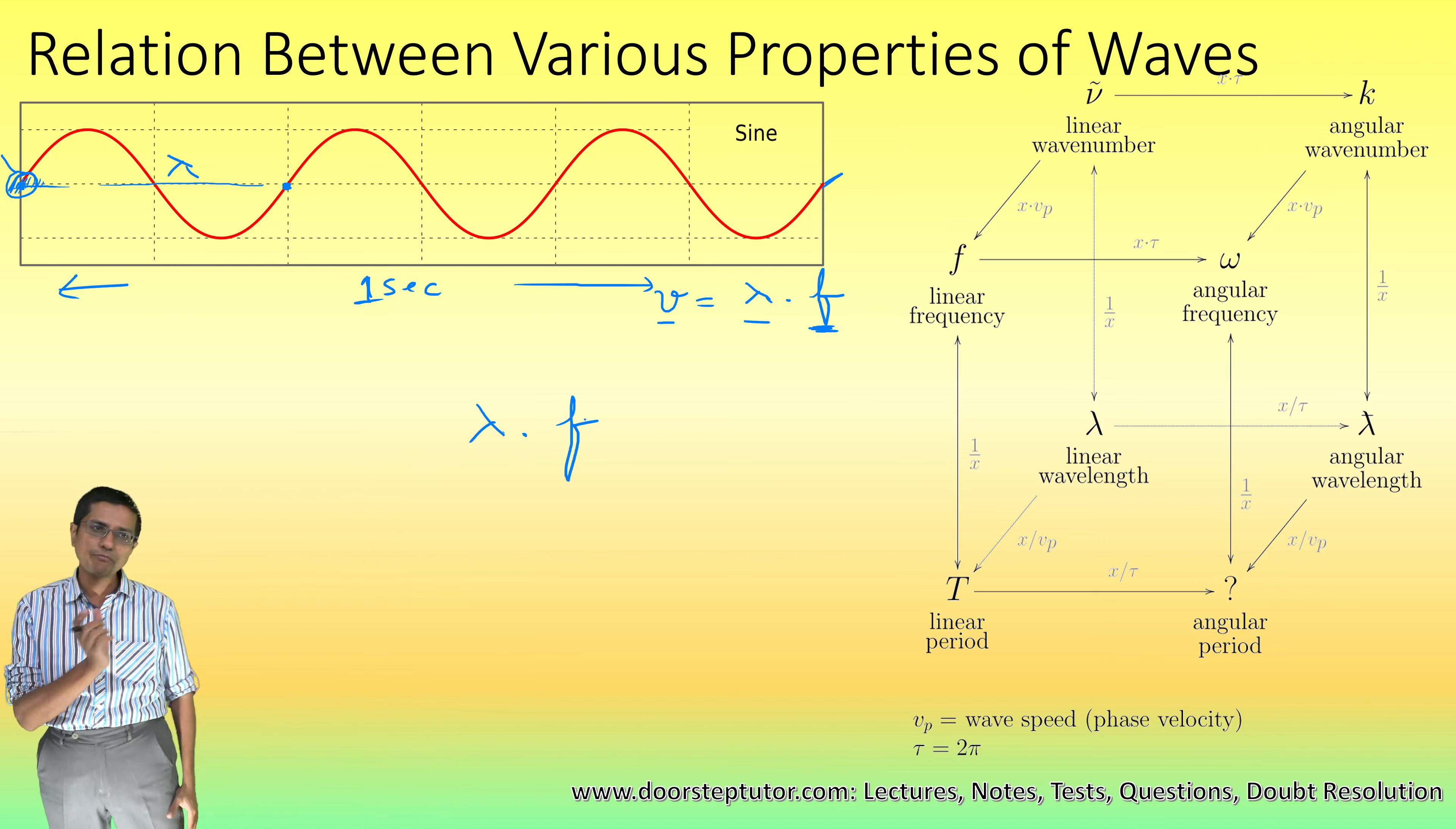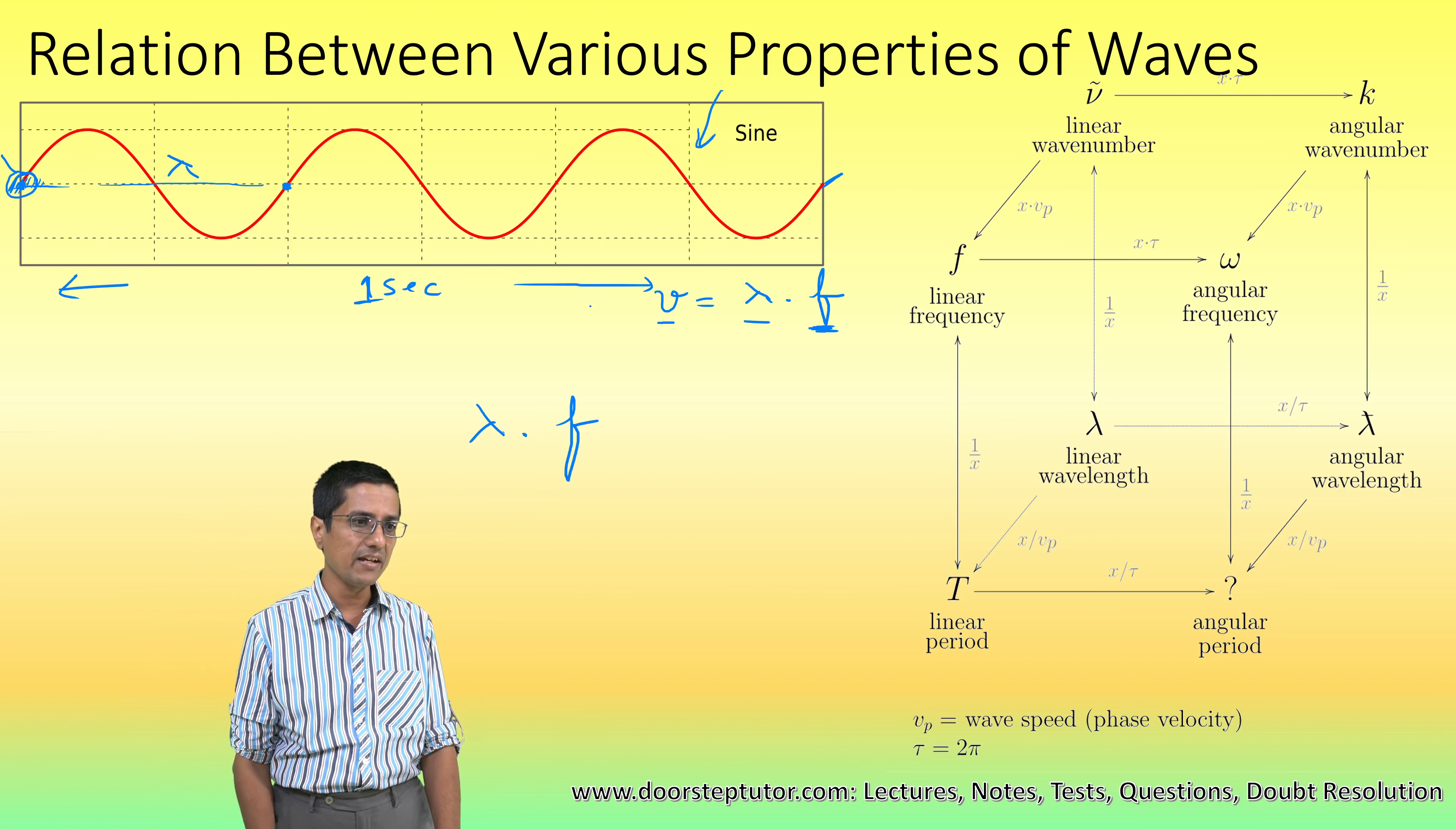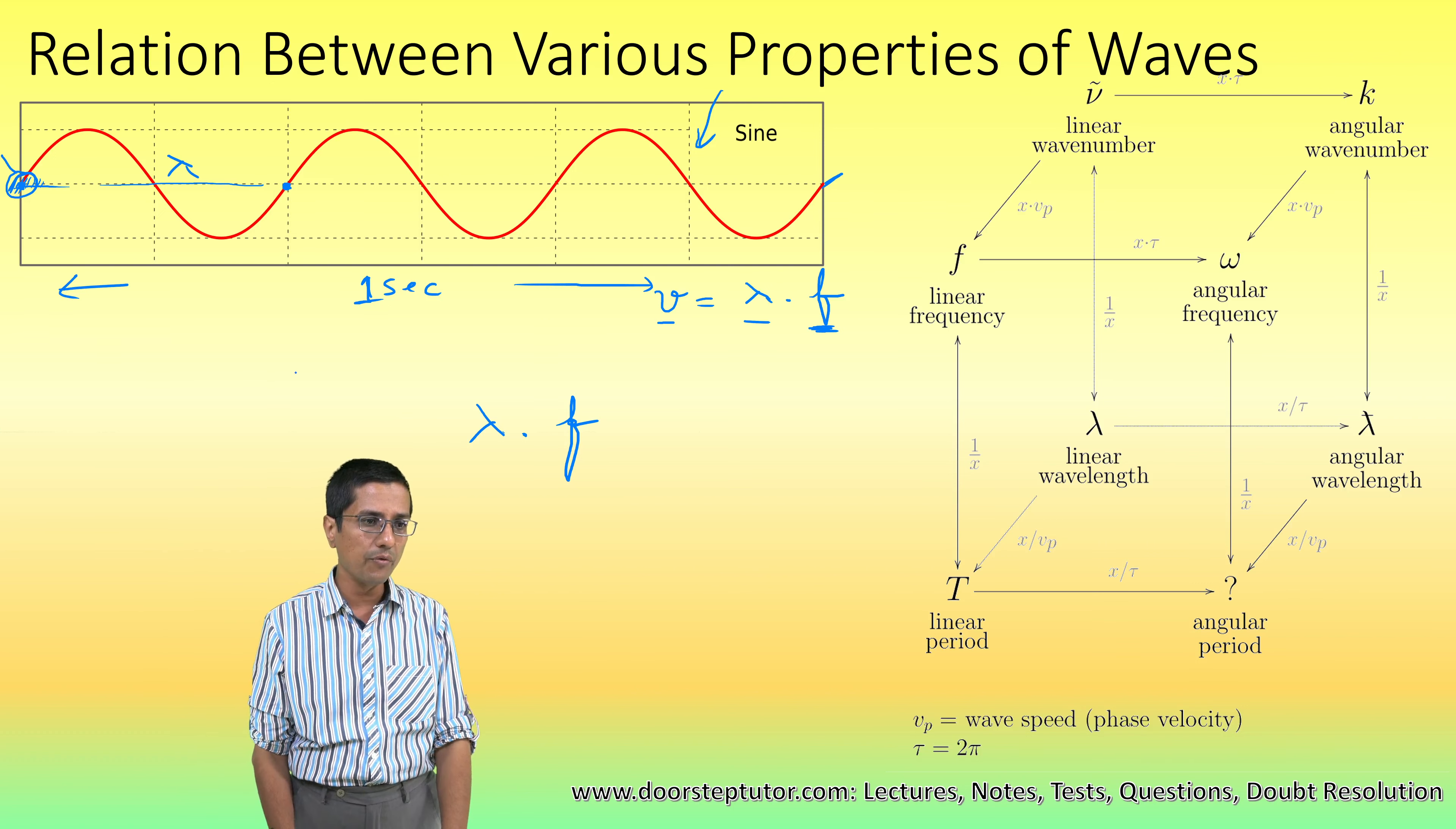So in one second, f number of wave patterns would be formed, and therefore the total distance of waves which is created in one second would be equal to lambda f. Now because the source is continuously producing these waves, in one second my old wave would have to move this much.